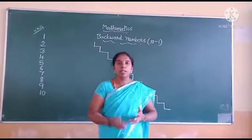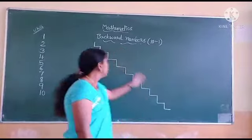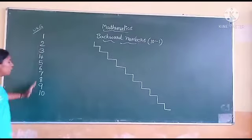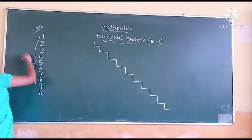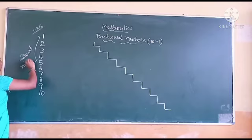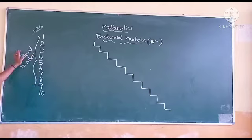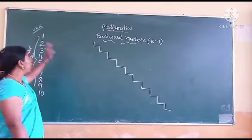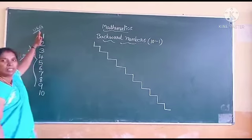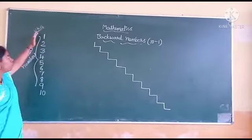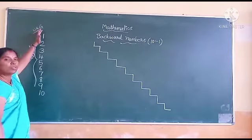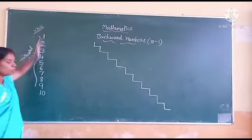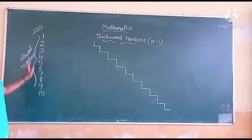We already learned the counting numbers. These numbers counted this way are called forward numbers. Forward means we can move from the starting, from the front to end — we count from the front to back. These are called forward numbers.